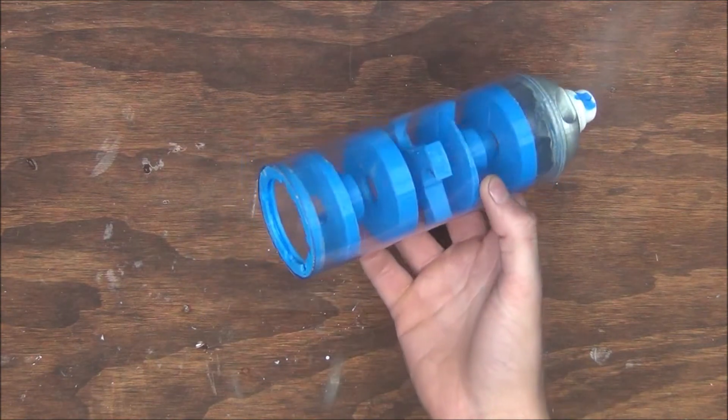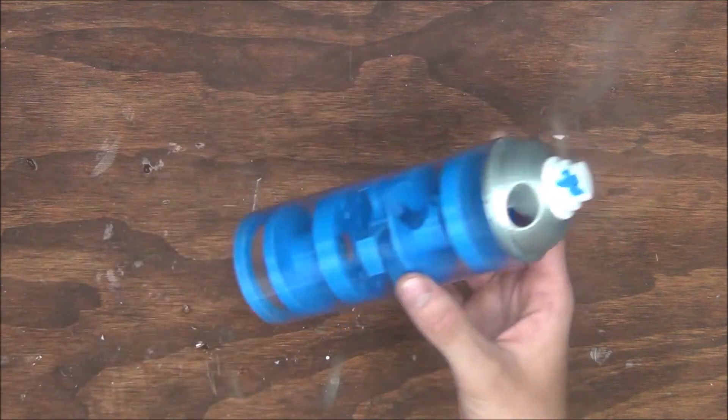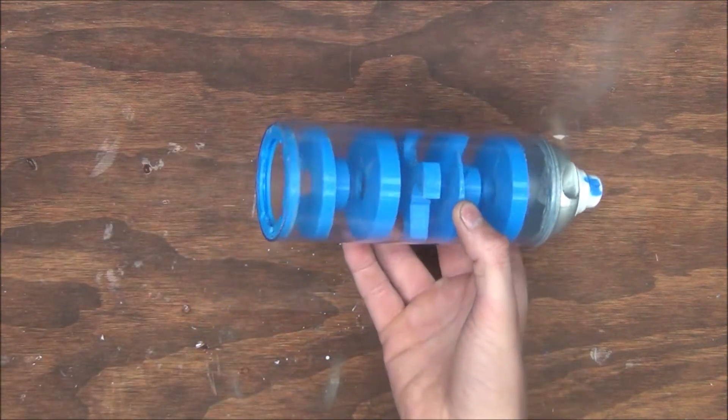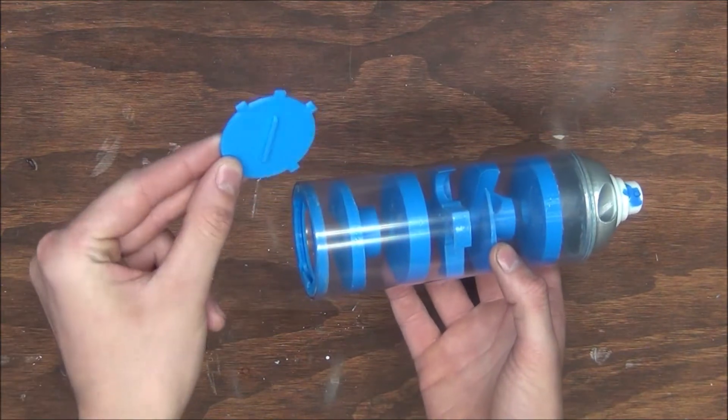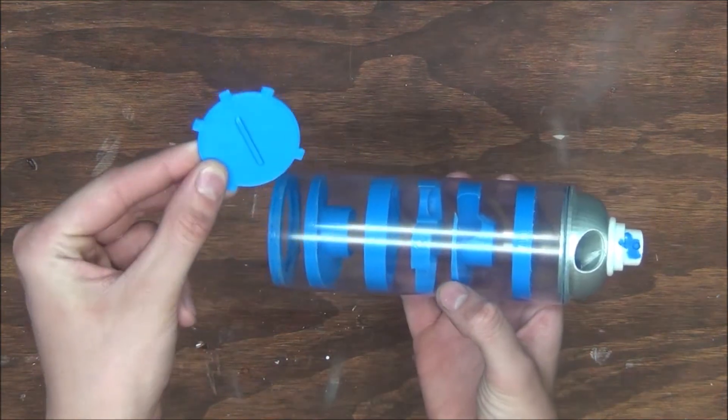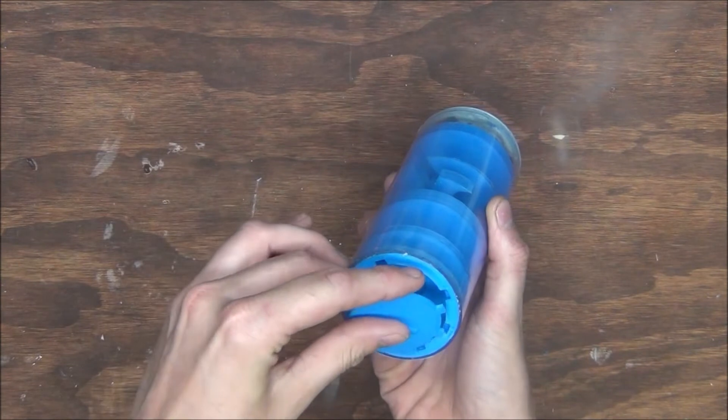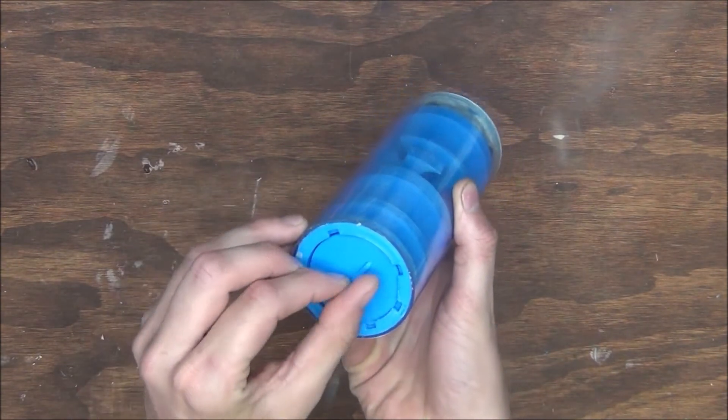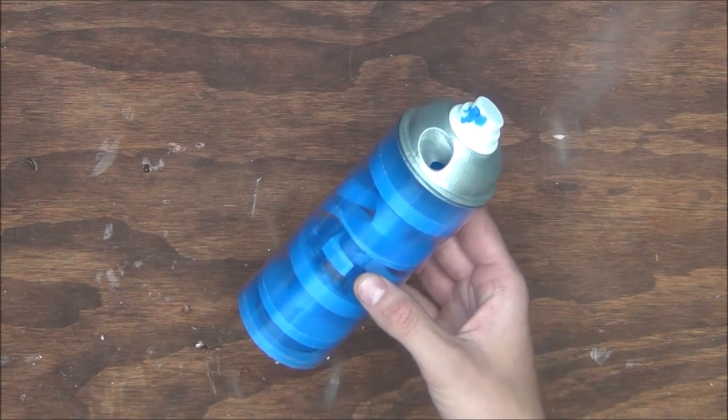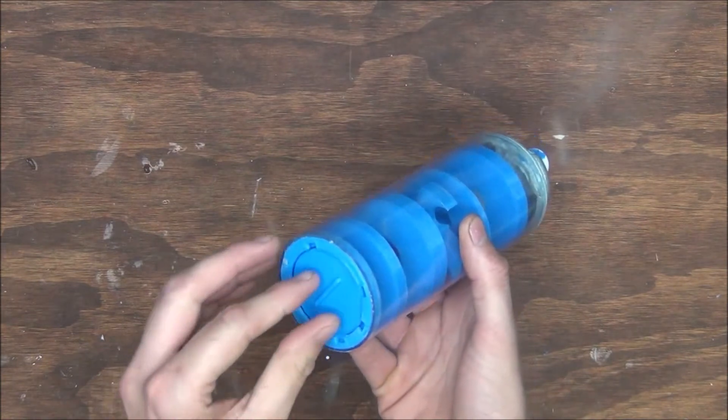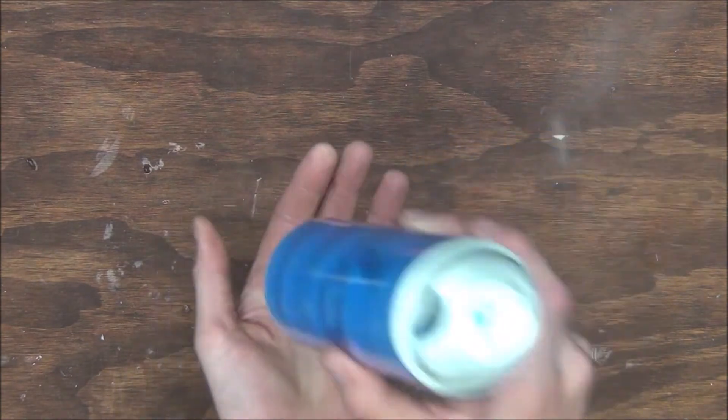Now this last little piece that I call a turtle, because it looks like a turtle, doesn't actually get glued in. It is the door for the bottom of the can. And so all we have to do with it is line up with the holes at the bottom of the can, push it in and give it a quarter turn so it doesn't fall back out. And then when we do want to take the door back out, we'll just do the whole process in reverse.